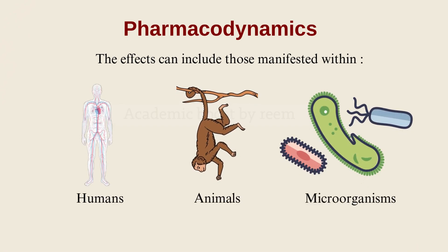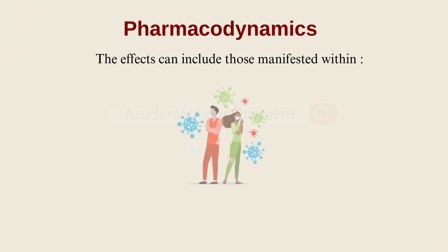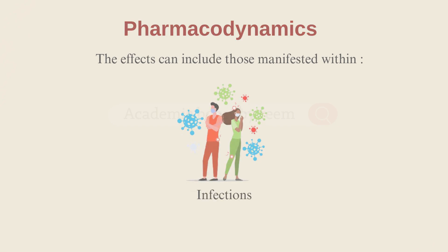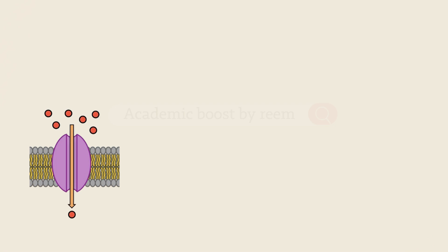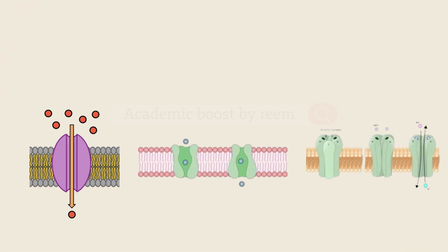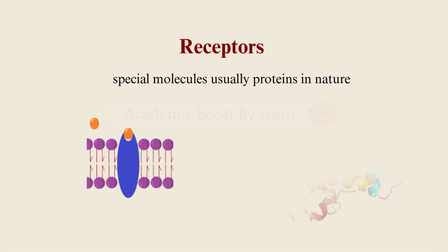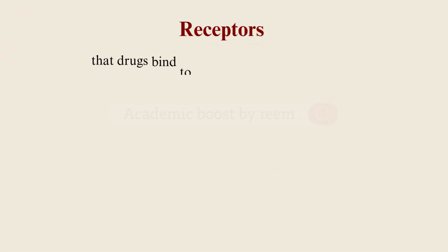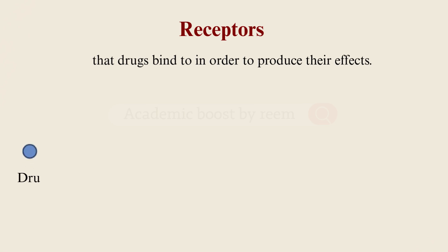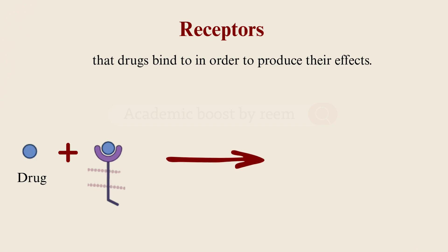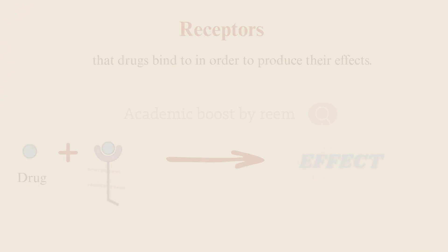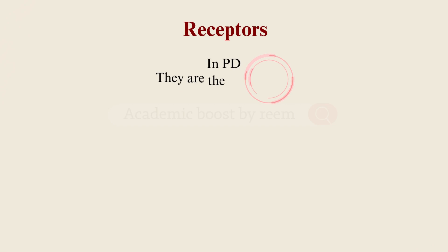These effects can include those manifested within humans, animals, microorganisms, or in combinations of organisms, such as in infections. A key concept to understand in pharmacodynamics is understanding receptors. Receptors are special molecules, usually proteins in nature, that drugs bind to in order to produce their effect. A specific drug binds to a certain receptor in the body to produce a particular effect.